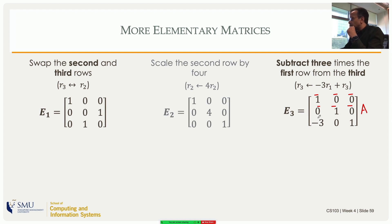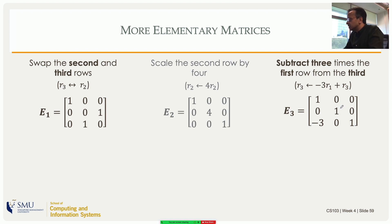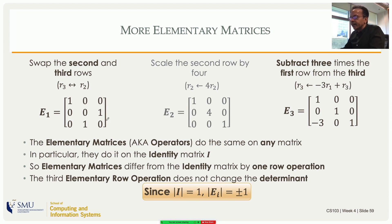For a more complicated operation — subtracting three times the first row from the third, i.e., R3 becomes minus 3·R1 plus R3 — I write the corresponding elementary matrix. Multiplying A on the left by it, the first and second rows are unchanged, and the third row becomes minus three times the first row plus one times the third row of A. That is exactly the operation minus 3·R1 plus R3.